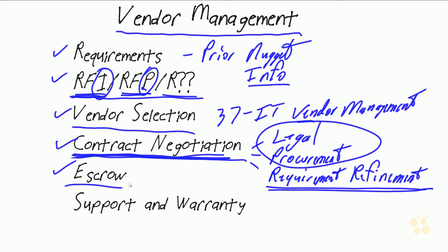And then other considerations, depending on exactly what you're purchasing: it's very common for an organization to request escrow code — obviously with software more so than hardware — so that should the vendor become insolvent, or should the vendor be acquired by another organization and drop support for the software you're using, you have some degree of assurance that you will be able to continue to use it on a go-forward basis. And all vendor management should be very concerned about support and warranty, so that we have assurance that this environment — this hardware, this software, this middleware — is going to be supported in the long term in our organization.